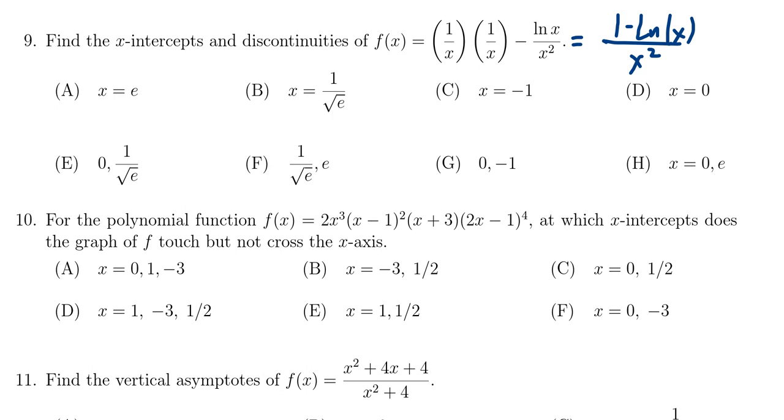So what can make the numerator go to 0? That's the first thing to look at there. If you get 1 minus the natural log of x equal to 0, because again, the fraction can only go to 0 if the numerator goes to 0. So if 1 minus the natural log of x equals 0,